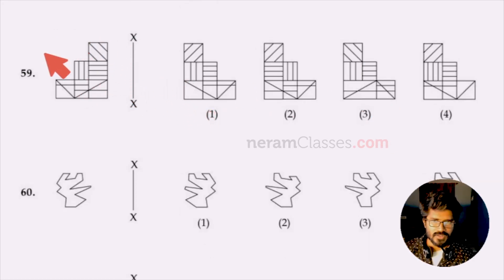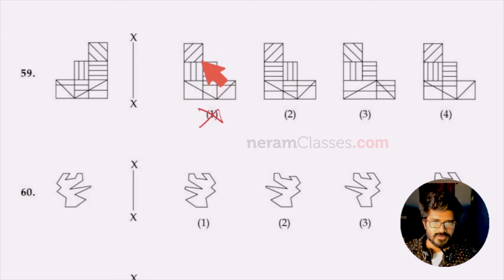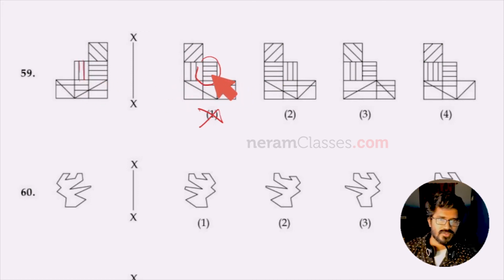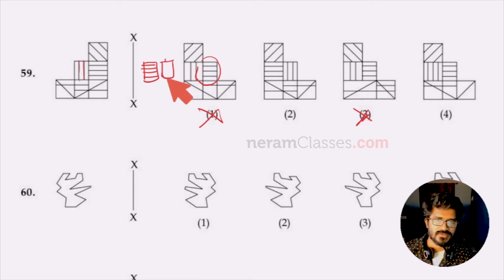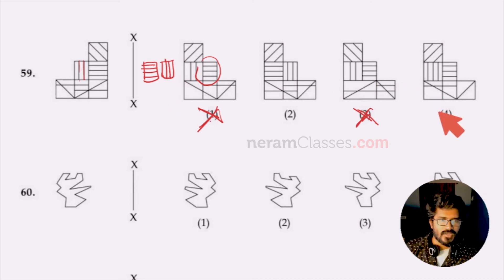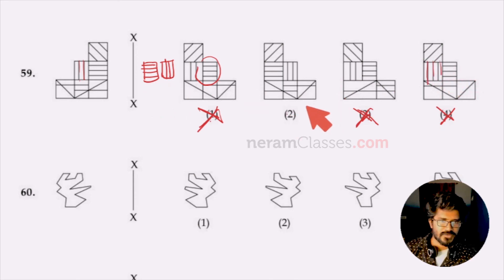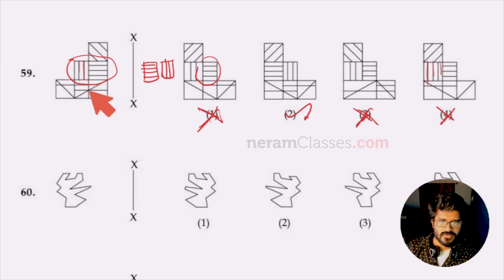Question 59: find the correct mirror image. Option one is wrong — the shape is very narrow and horizontally oriented whereas it should be vertical. Drawing just the key shape: it must come in a specific sequence. Options one and three don't match this sequence. Option four also lacks the vertical-then-horizontal pattern. Option two is the right answer, identifiable from the key drawn shape alone.